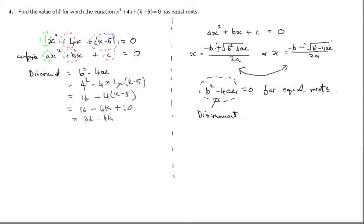So we've got hold of the discriminant. Now for there to be equal roots, for there to be only one solution, in effect for these two to be the same, this b² - 4ac has to be zero. For equal roots, the discriminant equals zero. So that means in this case, 36 - 4k has to be zero.